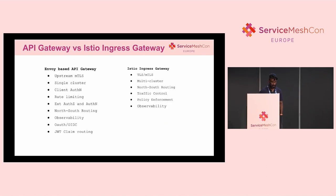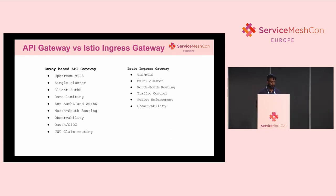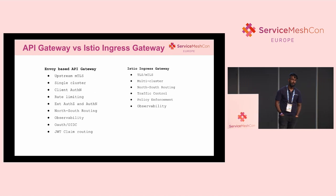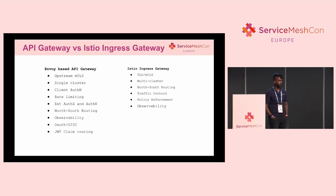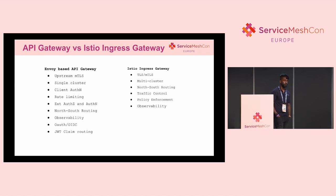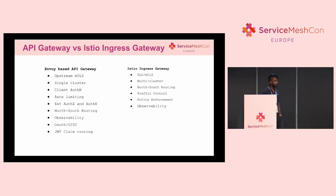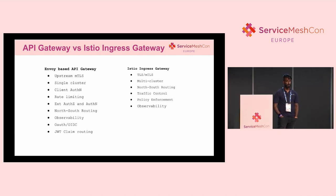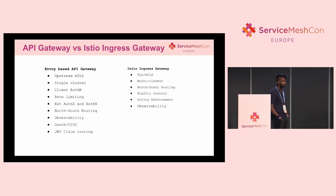Let's talk a little bit about service meshes and API gateways, specifically an API gateway that might be Envoy-based, and the Istio Ingress gateway. When we look at these two systems, what does an API gateway do for us? It's effectively providing us controls to do things like rate limiting, detecting and discerning what our upstream services are, providing TLS termination, authorization and authentication, and even some ingress capabilities.